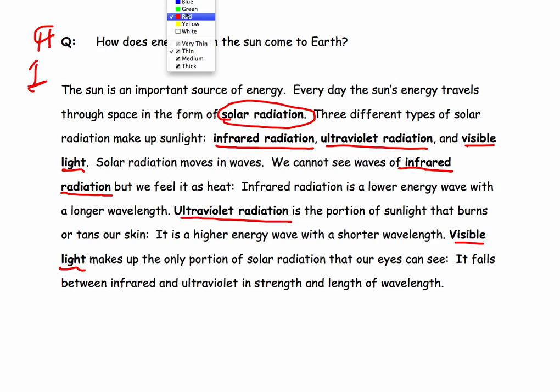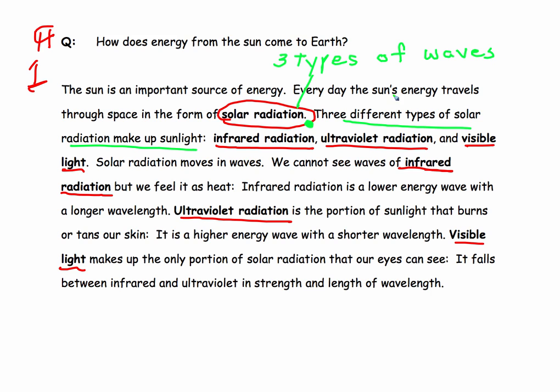Take your green colored pencil. Let's get some connections to these key words. So solar radiation, three different types of solar radiation make up sunlight. So solar radiation is actually three types.